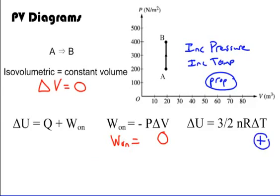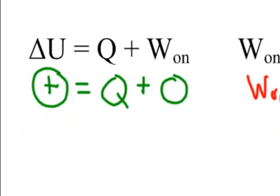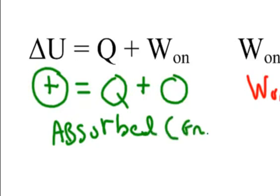Because the pressure went up, the temperature went up. So if temperature goes up, the internal energy is positive — because delta U equals three-halves NR delta T. Going back to our first law, delta U equals Q plus W: work is zero, delta U is positive, so Q must also be a positive number. A positive Q means you absorbed heat — it is endothermic.